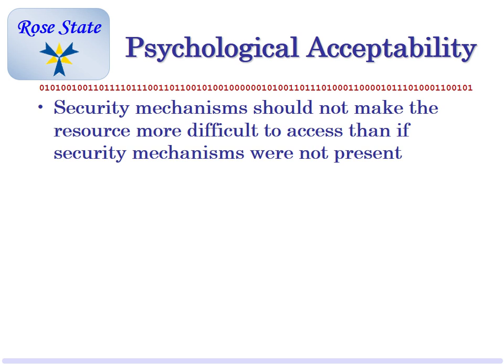Psychological acceptability: security mechanisms should not make the resource more difficult to access than if they were not present. I had a biometric door for my house and I got a cleaning lady. She would not use it — she thought it would take her soul or something. She literally refused. So I got rid of it. If you make the security mechanism to the point where people won't use it, it's not good.